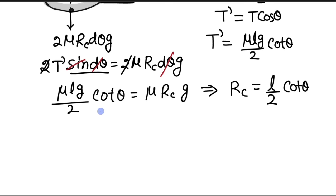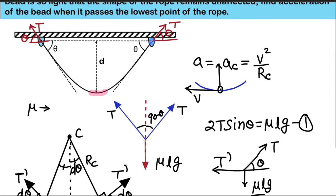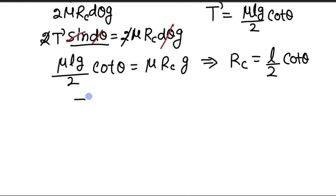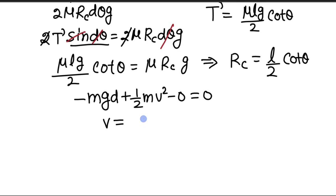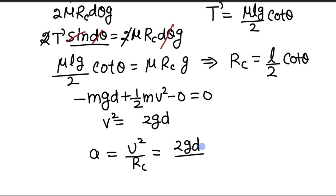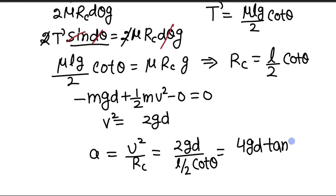Now we determine the velocity v. The bead of mass m is released from the suspension point and falls a depth D to the lowermost position. By conservation of energy: (1/2)*m*v² = m*g*d, so v² = 2*g*d. The total acceleration is centripetal: a = v²/Rc = 2*g*d / ((L/2)*cot(theta)) = 4*g*d*tan(theta) / L. This is the final answer.